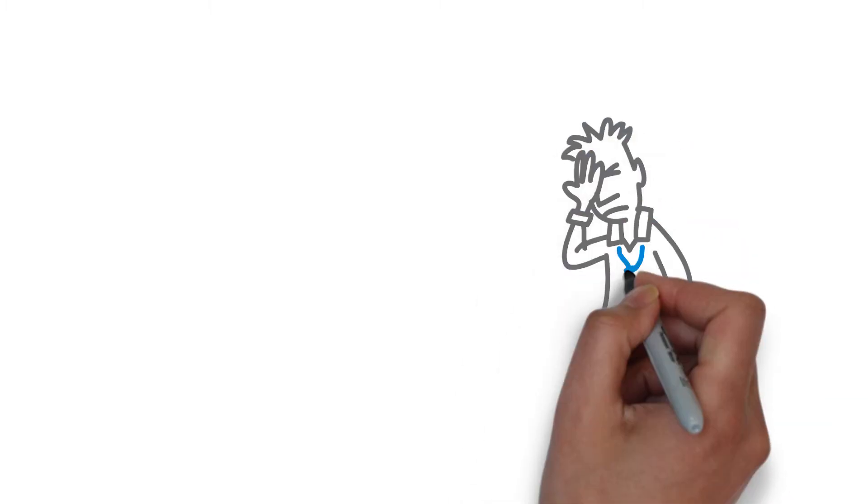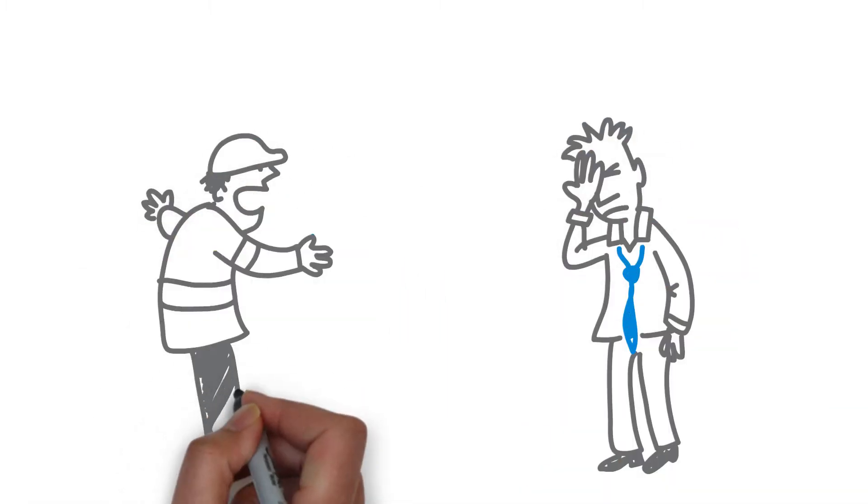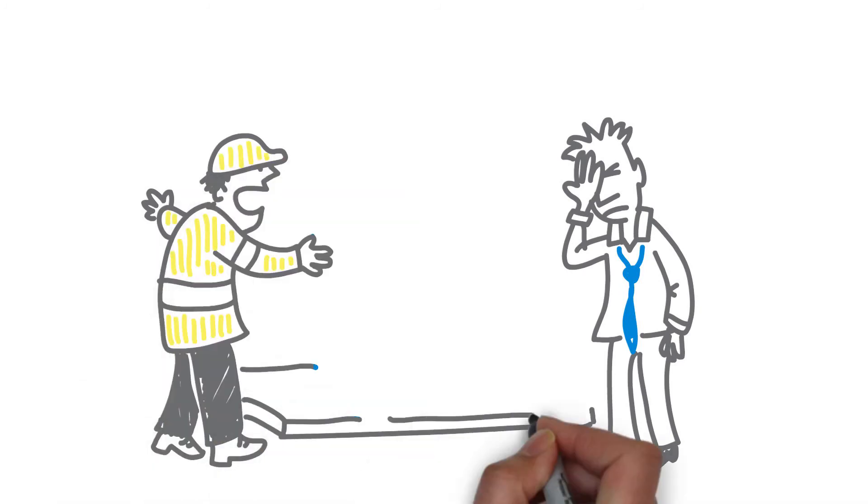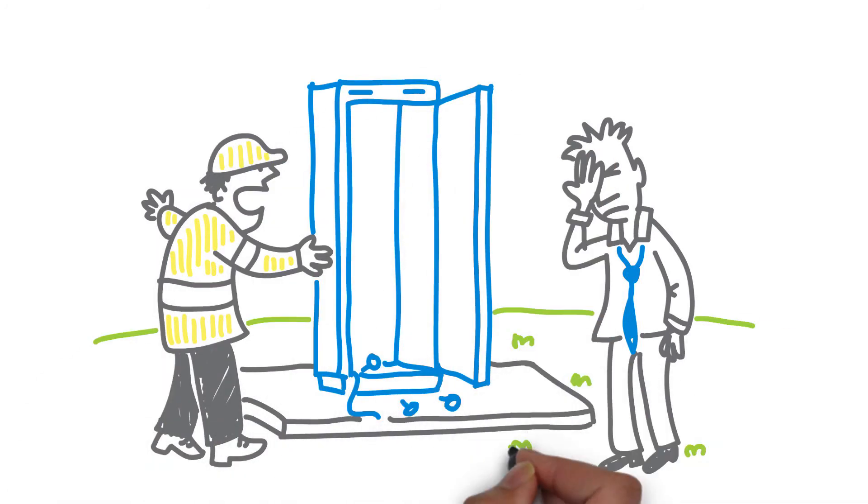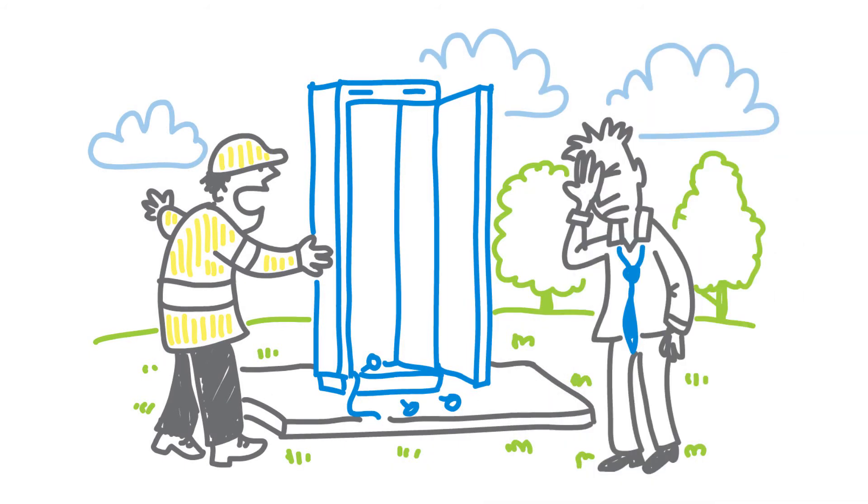And spare a thought for poor Steve. As his people toured the cell sites to identify the root problems, they discovered a few sites had already been down due to stolen equipment.